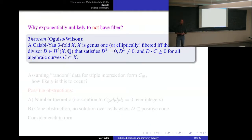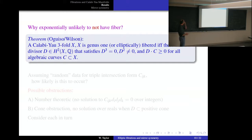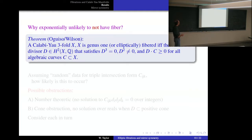Why is it exponentially unlikely to not have a fiber as h¹¹ goes up? There's a theorem proven by Oguiso and Wilson — conjectured by Kawamata — that a Calabi-Yau threefold has genus-one or elliptic fibration if and only if there's a divisor D satisfying D³ = 0, D² ≠ 0, and D·C positive for everything in the effective cone of curves. The D³ = 0 condition is really the hard one.